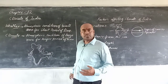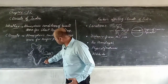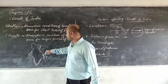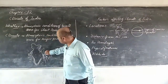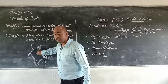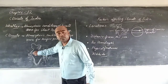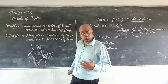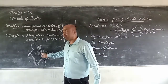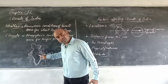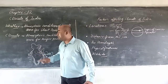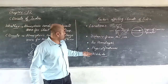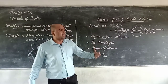Next is the Himalayas. Number one, the Himalayan region has a mountainous type of climate. Number two, the Himalayas stop the rain-bearing monsoon winds from passing towards China, causing a lot of rainfall in the North Indian plains. So the mountains act as a barrier for the rain-bearing monsoon winds, and that causes rainfall in the Indian plains.